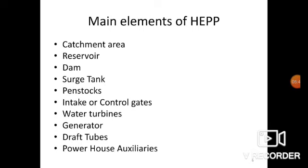Next is the water turbine. It works as an energy conversion device — a machine through which potential energy of water is converted into mechanical energy at the shaft. The main types of water turbines are impulse turbines and reaction turbines. The generator is a device through which electricity is produced. The shaft of the water turbine rotates the generator, which produces alternating current in the coils of the generator.